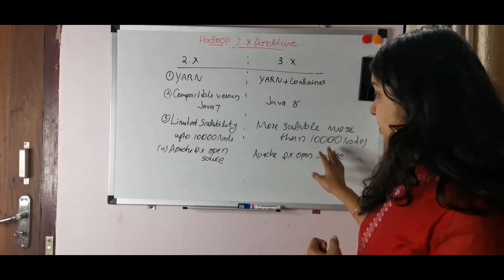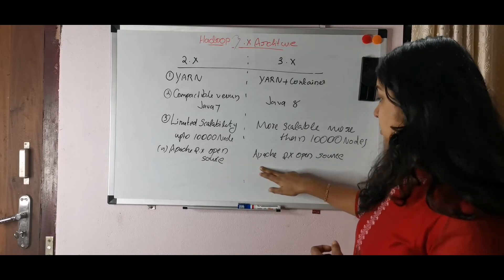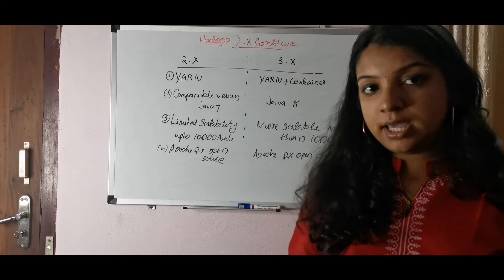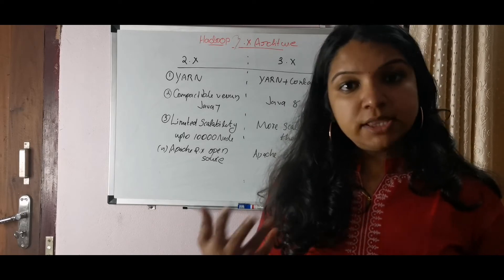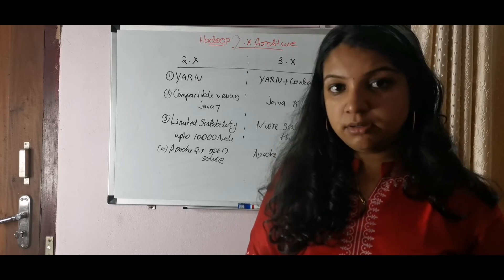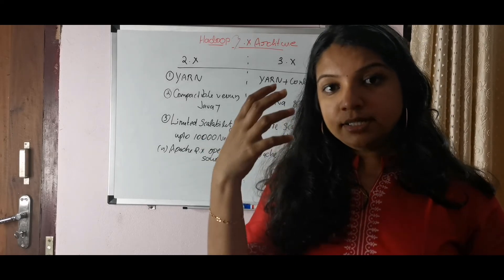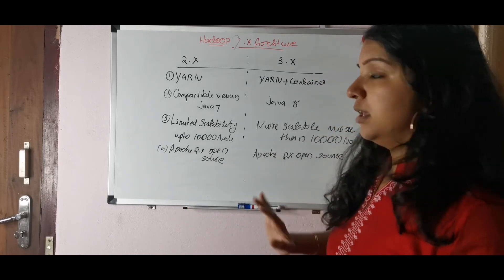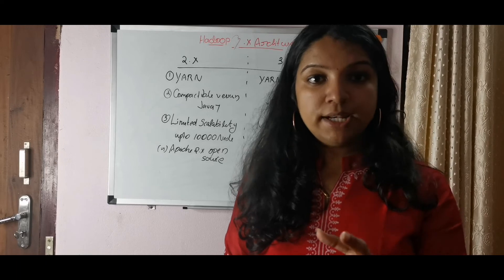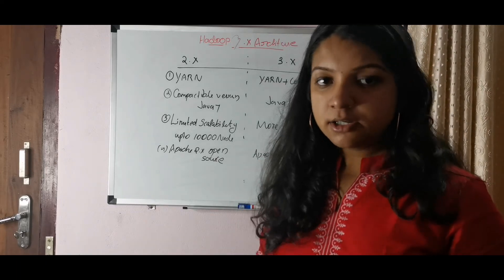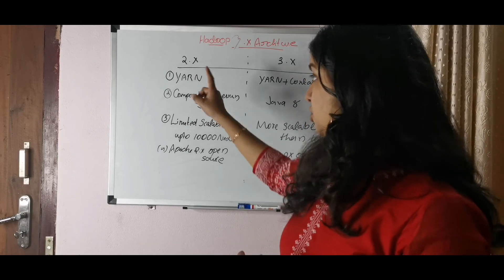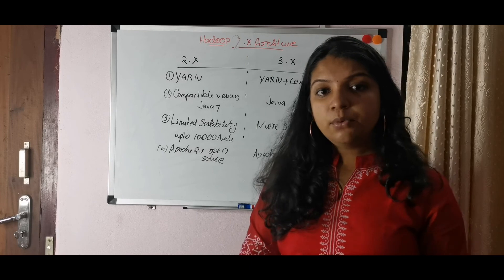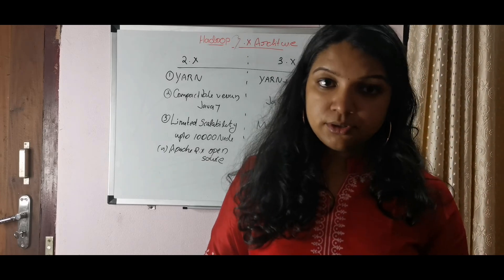Both are Apache open source systems. For load balancing, HDFS can divide and distribute the system based on extensions and execute accordingly. One more key difference: in the 2.x architecture, manual intervention is needed to recover the Name Node, but in the 3.x architecture, Name Node recovery is automatic and does not require manual intervention. That covers the architecture differences — I hope this is clear. Thank you.